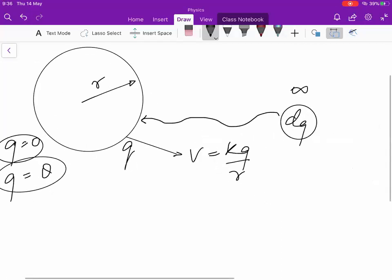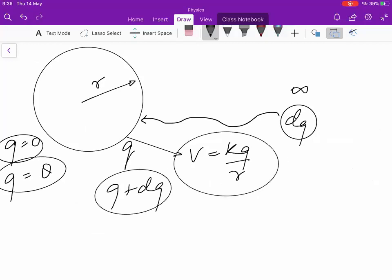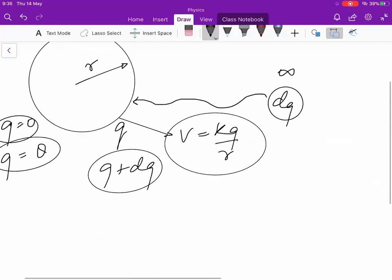Now when you add on another additional charge dq, so that its charge now becomes Q plus dq, this additional charge that has been brought from infinity has to do work against this potential. Potential at infinity is zero and potential of the surface is kQ/r.